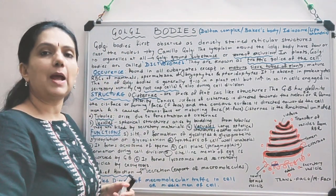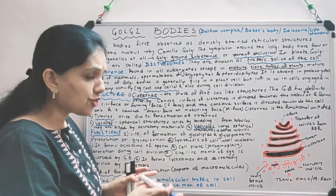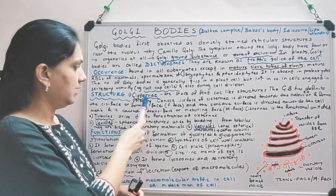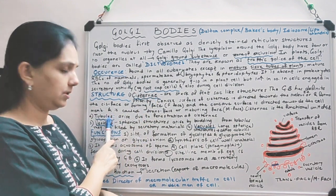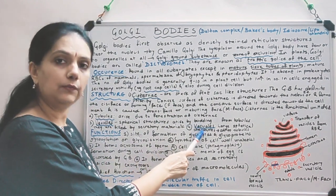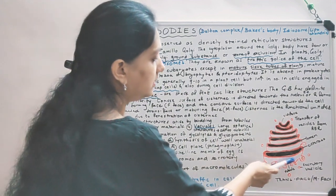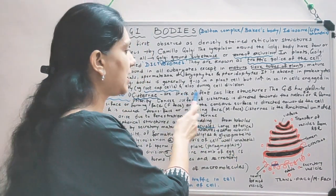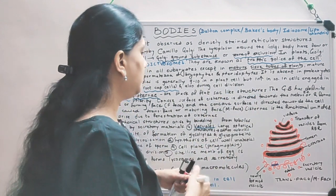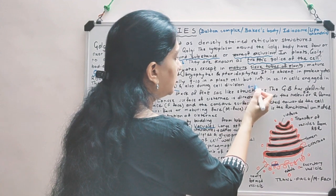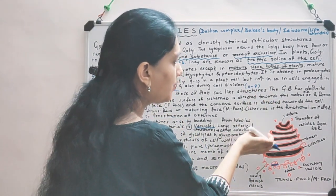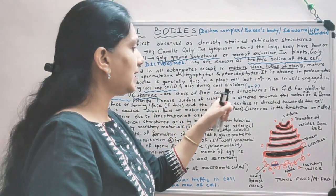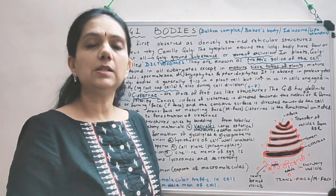Now taking up the structure, depending on the shape, you can identify four shapes in Golgi body: cisternae, tubules, vesicles, and vectules. Cisternae are flat sac-like structures put one upon another, stacked together. They may be about 6 to 8 in number. So they are stacked flat sac-like structures, 6 to 8 in number, and this Golgi body has definite polarity.